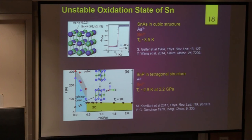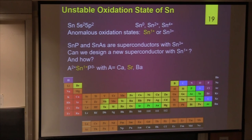We find unusual things that can lead to superconductivity — for example, unstable oxidation states like tin 3+. The Hosono group said SnAs is a superconductor because tin shows 3+. The Groos group said tin phosphide under high pressure is also a superconductor because of 3+. For tin, we know the stable oxidation states are 0, 2+, 4+. If they propose 3+, that's unstable. But another unstable one — tin 1+ — was forgotten. Can we make it?